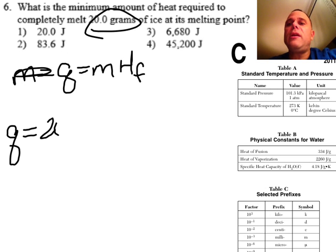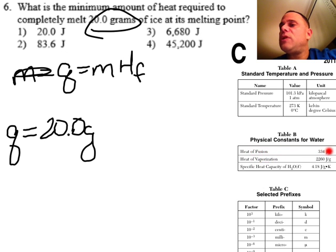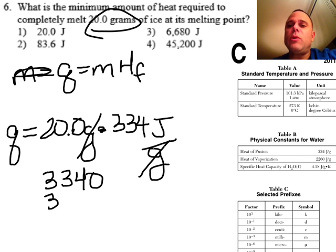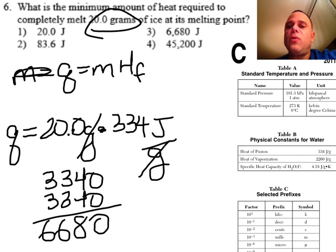So let's do this. Q equals I have a mass of 20.0 grams, and I know that Hf, heat of fusion, is 334 joules per gram. If I multiply this, our grams cancel out. 20 times 334, well 10 times that would be 3340, so 20 times would be twice that. So I know that I am looking for 6680, and there's my answer, choice number 3.